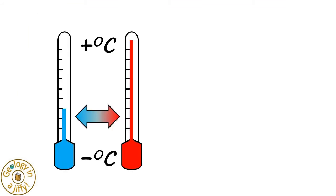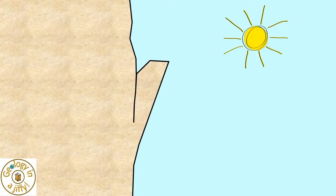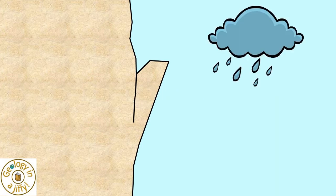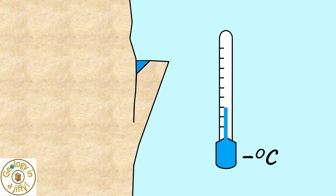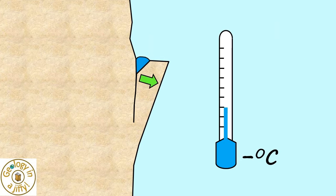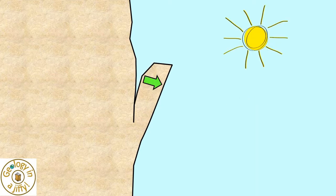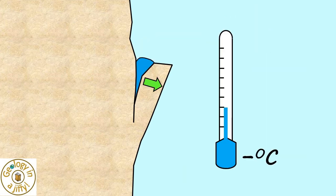Freeze-thaw happens where extremes of temperature and water act together. This cliff face has a piece of rock sticking out, its parts separated from the cliff by a crack. When it rains, rainwater collects in this crack section. Below zero degrees Celsius, the rainwater freezes and turns to ice, the ice expanding as it forms, forcing the rock fragment away from the cliff. As temperatures rise, the ice melts, leaving the fragment now more dislodged. Further rain brings a larger puddle, which then freezes, the new ice further expanding the crack.